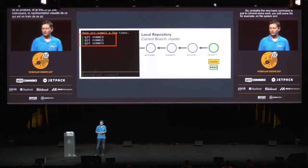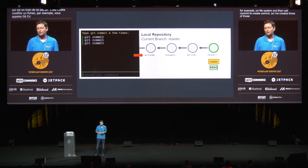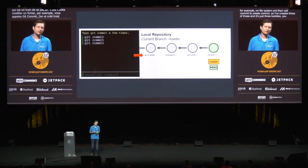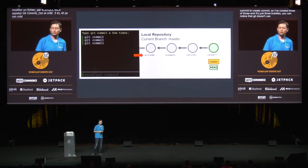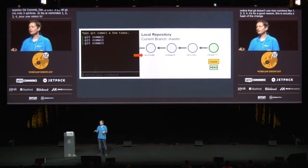Probably the very basic command is just to commit some work. You edit some file, for example on the file system, and then call git commit to create commits. I've created three of those and it's just three bubbles. You can notice that Git doesn't use nice numbers like 1, 2, 3, 4 — and it's for a good reason. This is actually a hash of the change itself. So later when Git synchronizes repositories, it will know that when it sees two same hashes it's the same change and doesn't need to transfer the data. When it sees a new hash, it will need to synchronize. This is quite important.